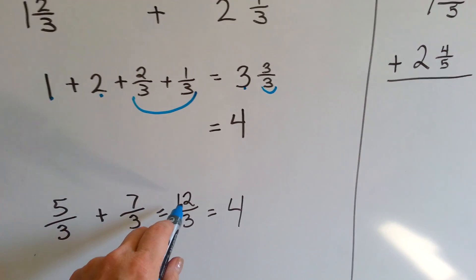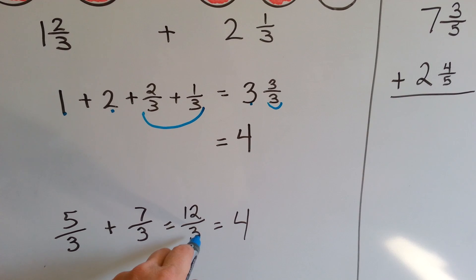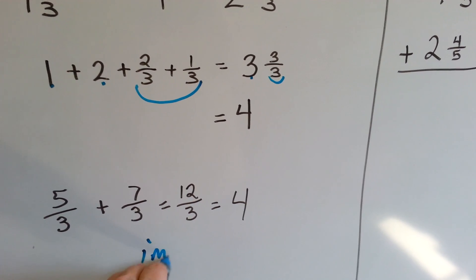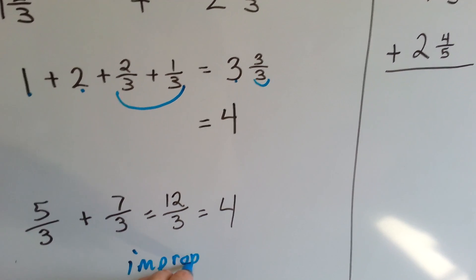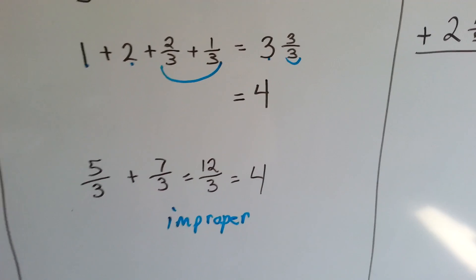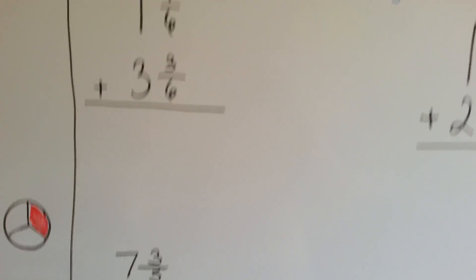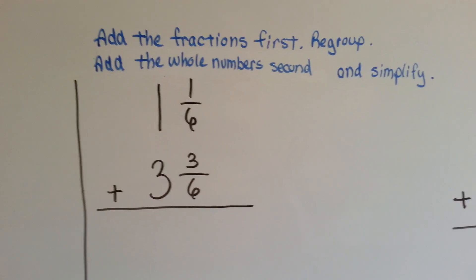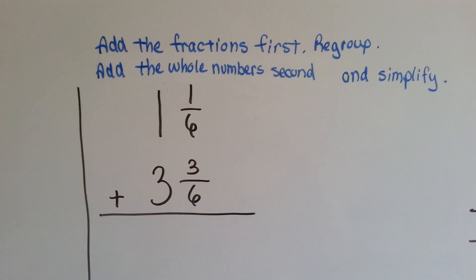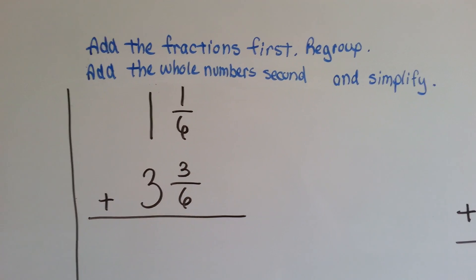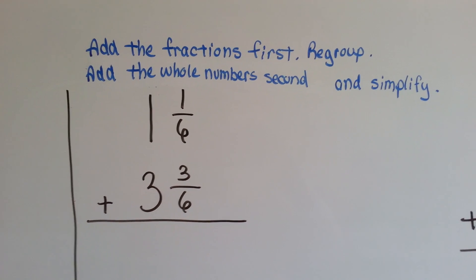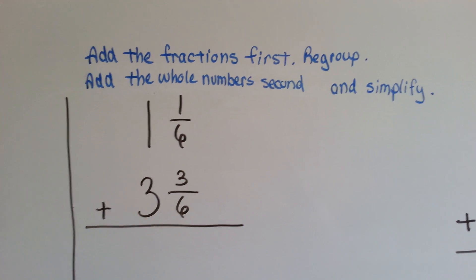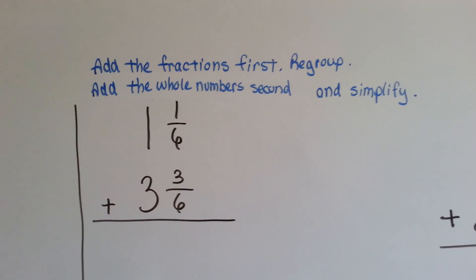Remember that when the fraction has a larger numerator than denominator, it's called an improper fraction. So, let's look at this. This looks more like a regular math addition problem. To solve this, you add the fractions first, you regroup them, and then you add the whole numbers second. And then we simplify it.